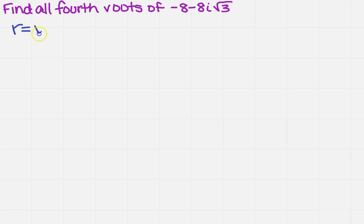Well, we recall that r equals the square root of a squared plus b squared, and we know from our given that a is minus 8 and b is minus 8 square root of 3.